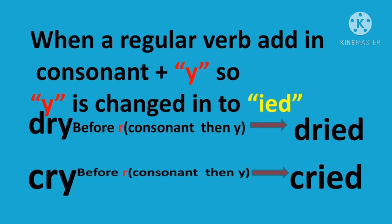Now let's discuss some spelling rules. The first rule is: when a regular verb ends in a consonant plus -y, the -y is changed to -i and then -ed is added. For example, 'dry' — consonant r then y — the y is omitted and we add -ied. So dry becomes 'dried' and cry becomes 'cried.'